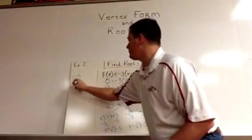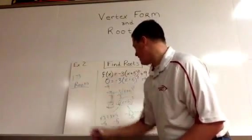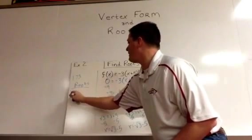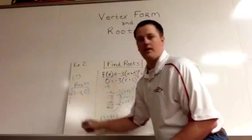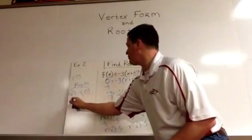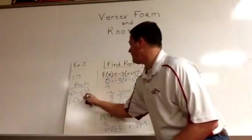This would give us roots of square root of 3 minus 5, comma 0, or the negative square root of 3 minus 5, comma 0.